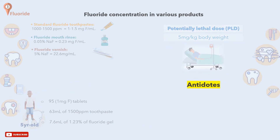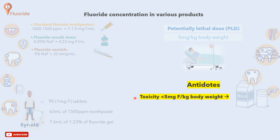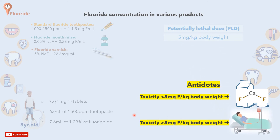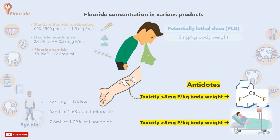Now let's learn about antidotes in case of toxicity. For intoxication with less than 5 mg of fluoride per kilogram of body weight, give the person a large volume of milk. Milk has a proven role in reducing the absorption of fluoride since it is rich in calcium, which has a fluoride binding effect. For intoxication with more than 5 mg per kilogram of body weight, refer to the hospital immediately for gastric lavage. In case of any delay, give intravenous calcium gluconate and an emetic to aid in emptying the stomach.